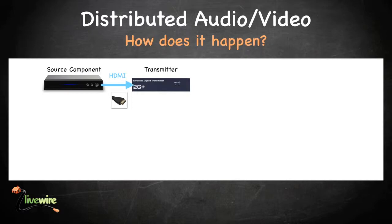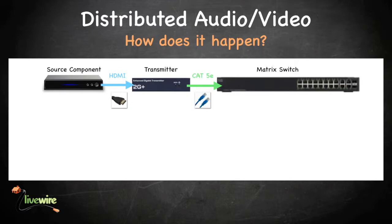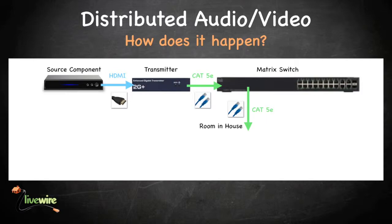Each transmitter is then connected to the matrix switch with a Cat5e, 6, or 7 cable. The matrix switch is going to make sure that each receiver is only watching one transmitter at a time. Remember those Cat5e cables we ran from each room in the house to the SMC? Those are now going to be used to connect each room to the matrix switch. For each location in the house where a signal will be sent, a Cat5e, 6, or 7 cable is run from that location to the matrix switch.